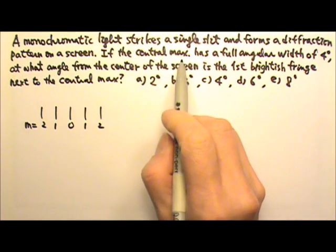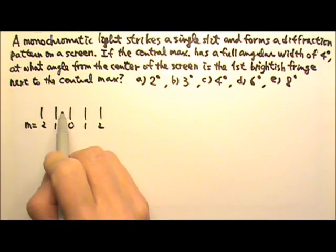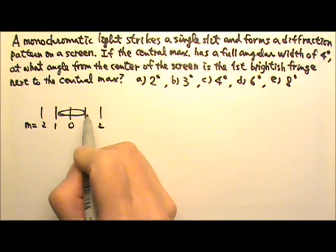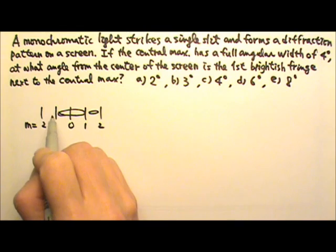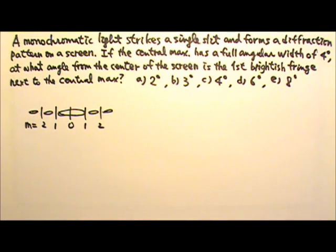There is a central maximum that is twice as wide, and that's at the center right here, and it occupies two spaces. So that's the central maximum. And then all the other bright fringes, they are half the size, and they're equal sizes.